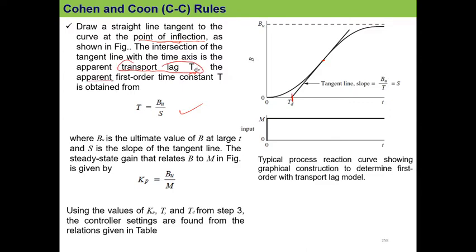The apparent first-order time constant t is calculated as bu divided by s, where bu is the ultimate steady-state value of b at large t, and s is the slope of the tangent.